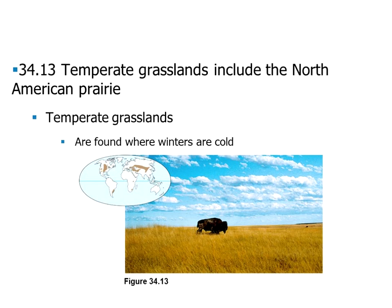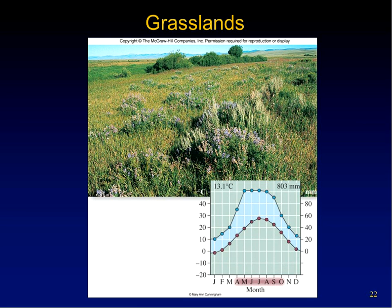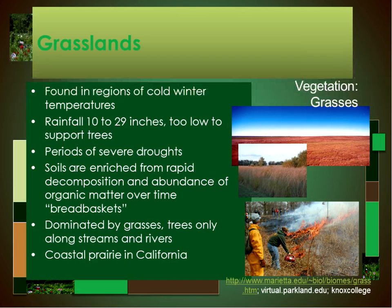Temperate grasslands include the North American prairie and other prairies around the world. You can see from the map the types of places that they tend to occur — they're found where winters are very cold. The grasslands are typically found at mid-latitudes on all continents, just like North America. The grasslands are kept open by extreme temperatures, dry conditions, and periodic fires, so that trees are generally not able to make a go of it. However, they have high plant and animal diversity.